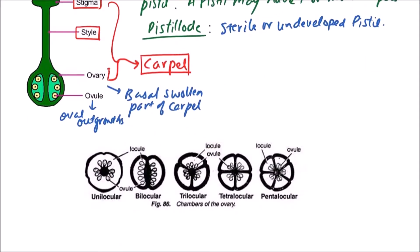Now the types of ovaries on the basis of number of locules. It can be classified into few types: unilocular if one locule is there, bilocular if two locules are there, trilocular if three locules, and tetralocular if divided into four compartments or locules.